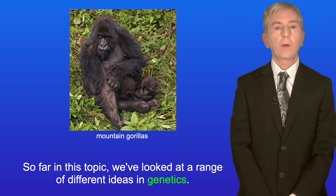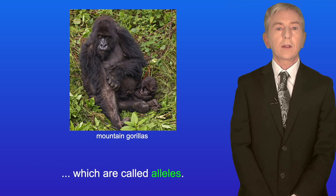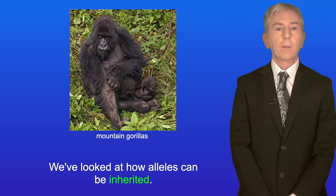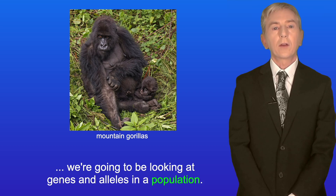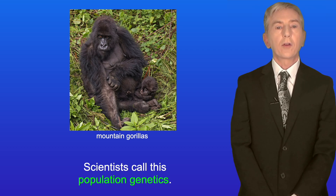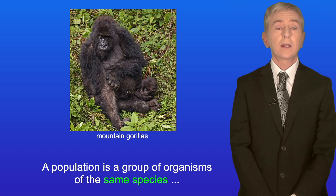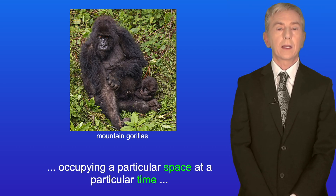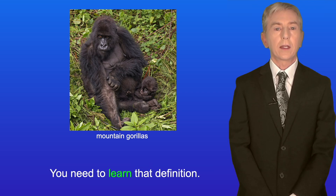So far on this topic we've looked at a range of different ideas in genetics. We've looked at how genes can exist in different versions which are called alleles, and we've looked at how alleles can be inherited. In this video and the next few videos we're going to be looking at genes and alleles in a population, and scientists call this population genetics. So what is a population? Well a population is a group of organisms of the same species occupying a particular space at a particular time that can potentially interbreed, and you need to learn that definition.